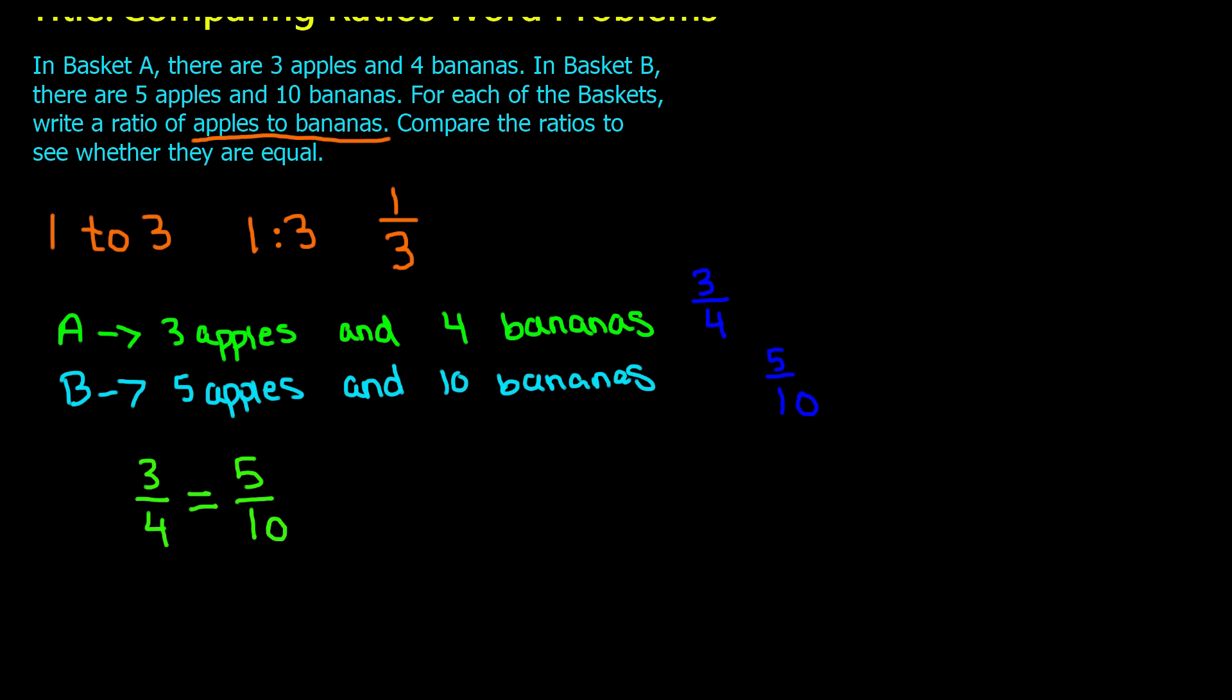When I do cross multiplication, I will be multiplying three by ten and five by four. Three times ten is thirty and four times five is twenty. These products are what are going to determine whether these ratios are equal to each other or not. We see that thirty and twenty are not equal to one another. Therefore, these ratios are not equal to one another.